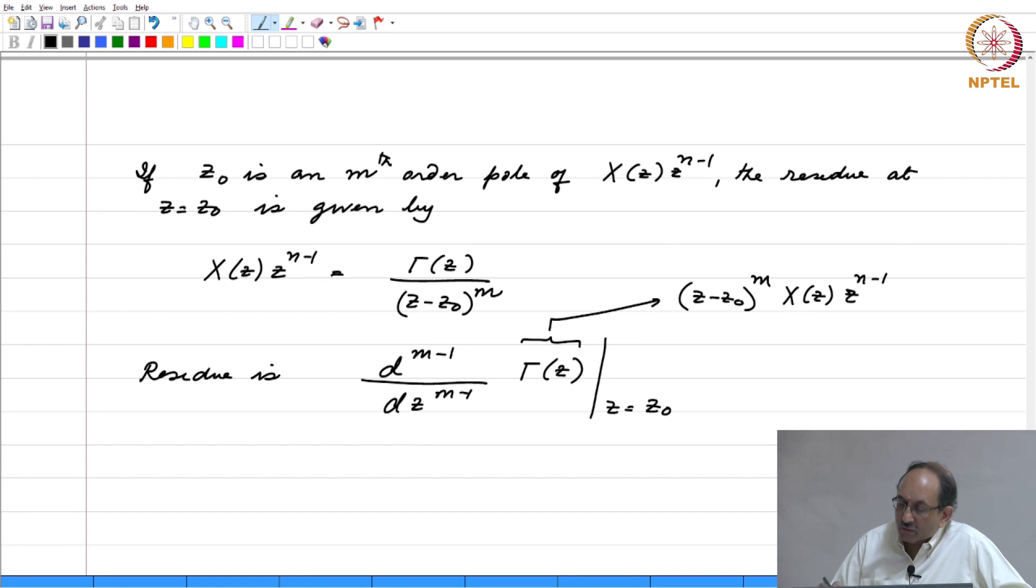Again, this is consistent with what we have seen earlier. For example, if this were a first order pole, then I also need 1 by the m minus 1 factorial. Therefore, if this were a first order pole, m is 1.